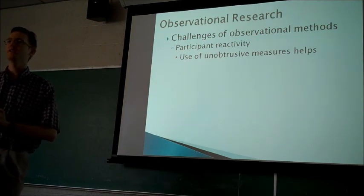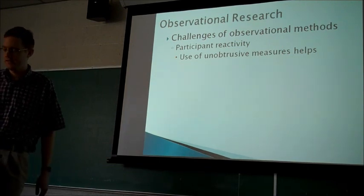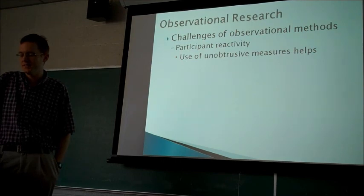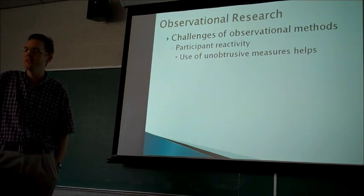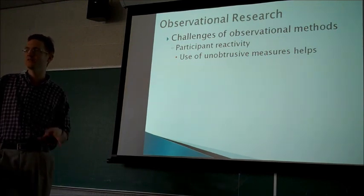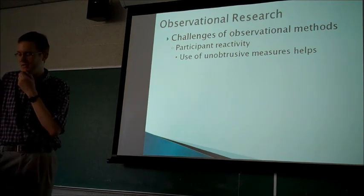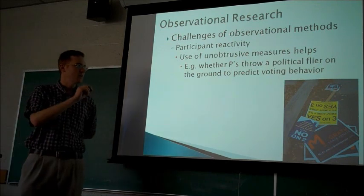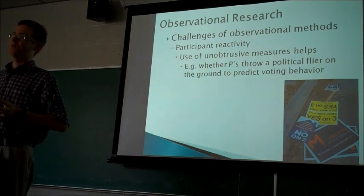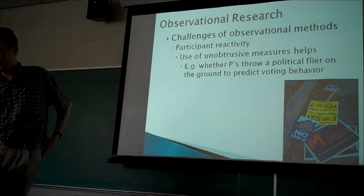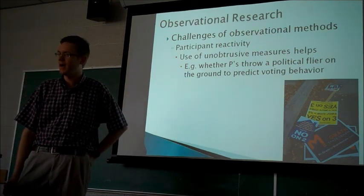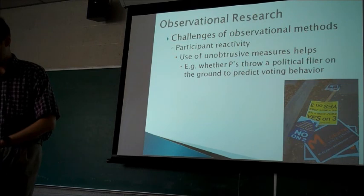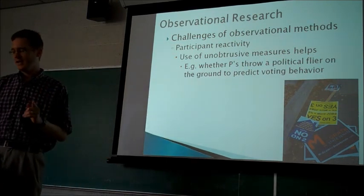A lot of times, researchers will study behaviors that people usually just don't think about. I have an example from a conference last year. This was a study done by Bob Cialdini, who is a really famous researcher who studies social influence. He wanted to come up with a clever way to measure voting outcomes, so he went around and put political fliers on people's cars when they had gone to vote on election day. Of course, you can ask people who they voted for, but then you're dealing with all the issues that go along with self-report — they might not be honest, they might refuse to answer.